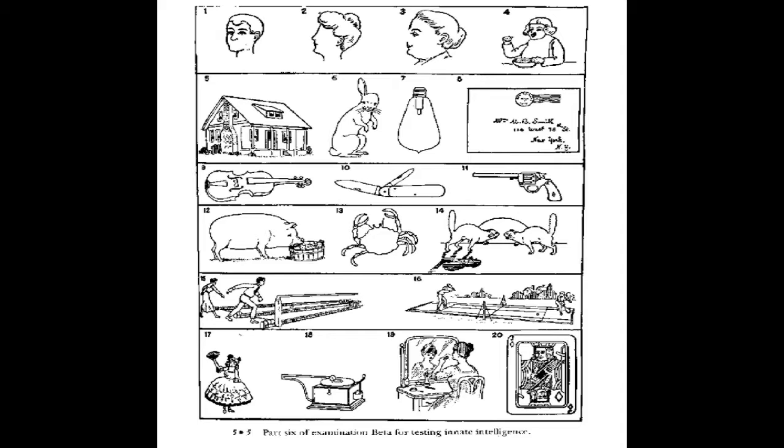A peasant from northern Italy would probably not have access to electricity and therefore have no concept of the filament in a light bulb, nor would they be applying makeup like the woman in the bottom image.